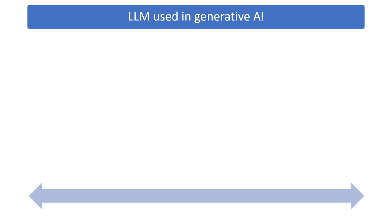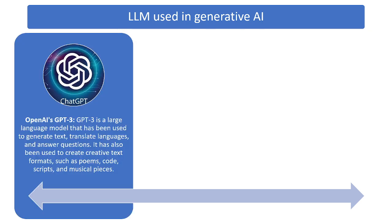Now let's discuss which companies are using LLM models. The most famous is OpenAI's ChatGPT. GPT-3 and now GPT-4 are large language models used to generate text, translate languages, answer questions, and create content such as poems, code, scripts, and musical pieces. GPT stands for Generative Pre-trained Transformer, and these models are very widely used for many applications.